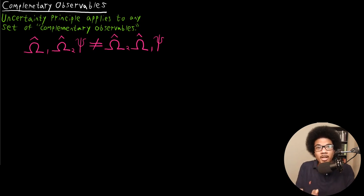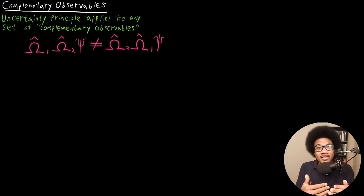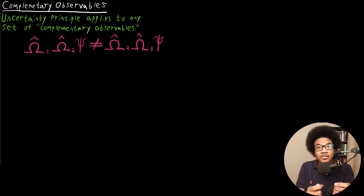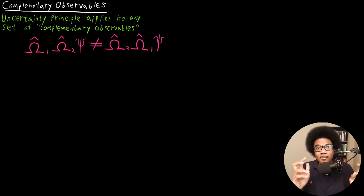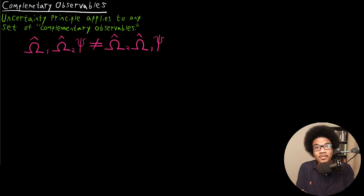In this video, we're going to introduce the concept of complementary observables. In the previous few videos, we've been looking at the Heisenberg uncertainty principle. The uncertainty principle is actually a lot more general than just dealing with position and momentum — it actually deals with any general set of what we call complementary observables. So the uncertainty principle can apply to any set of complementary observables. The two we looked at already were just position and momentum. But what are complementary observables?